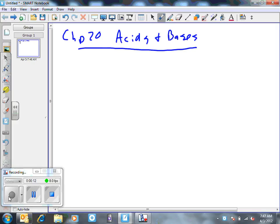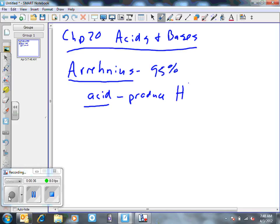We're going to talk about some of the general terms. An Arrhenius Acid is a definition that works for about 95% of the time. And in an Arrhenius Acid definition, really what it is, is the acid produces hydrogen ions in an aqueous solution.